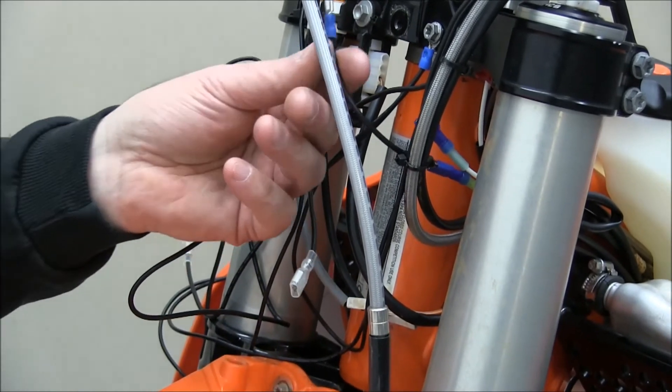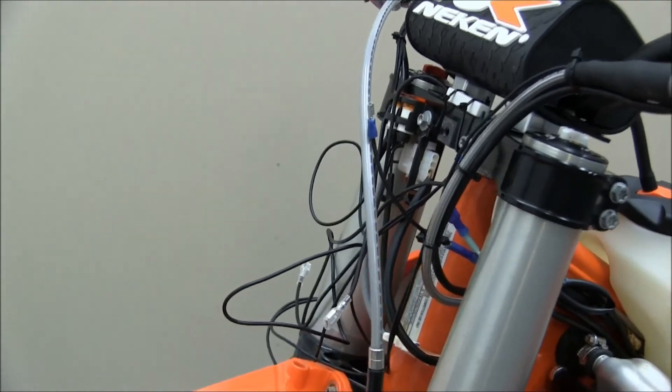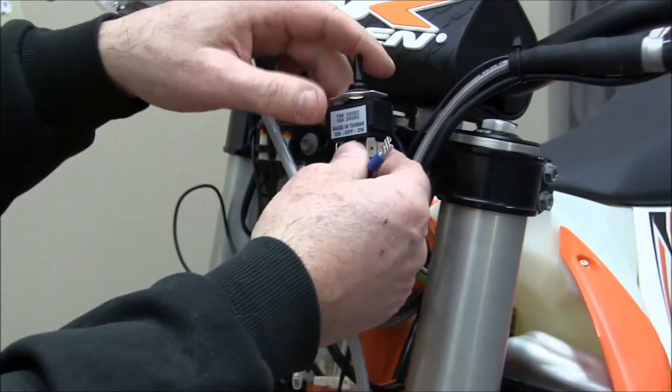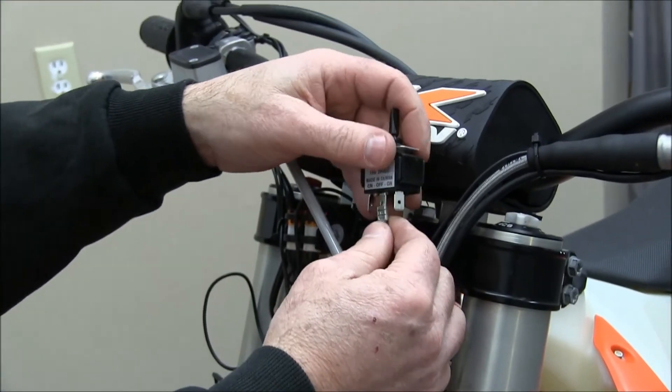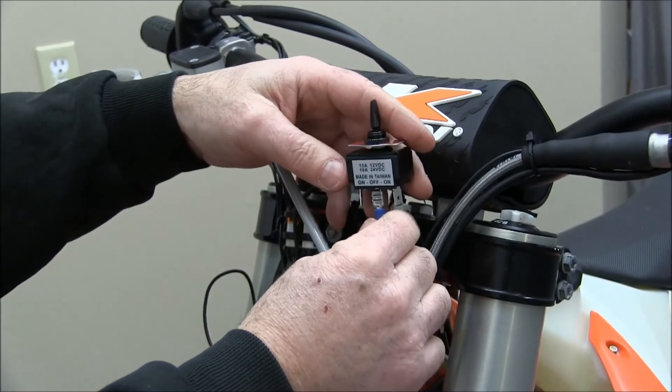This is going to go through the switch that comes in the kit. You'll put the stator power up to the center terminal of the on-off switch. Low-high on-off. Just like that.